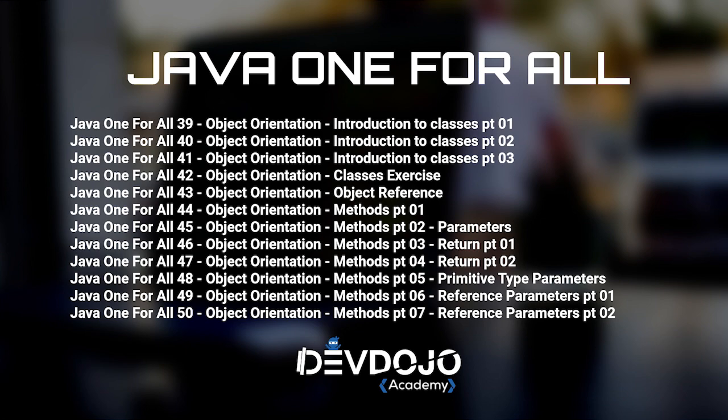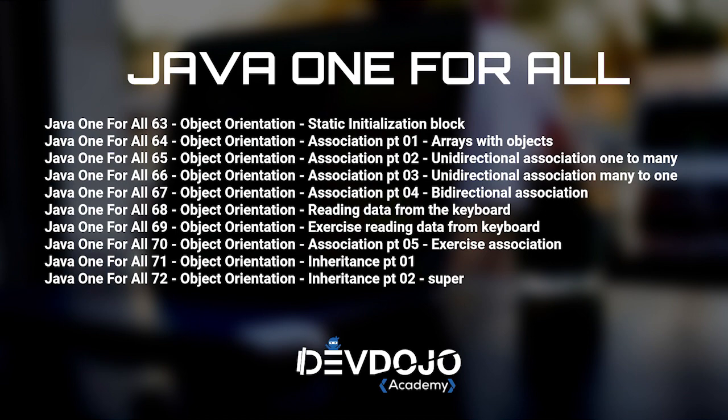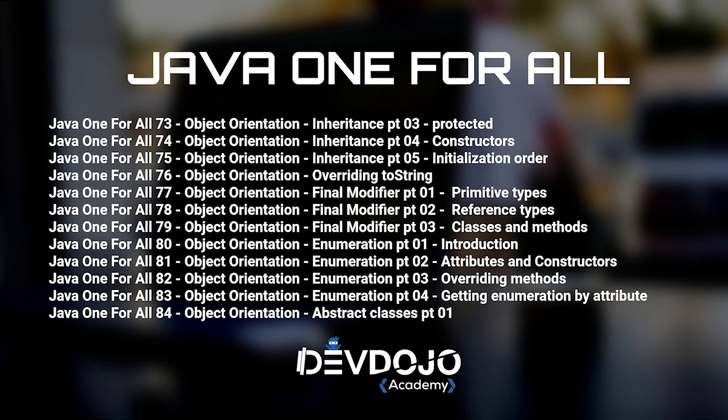Let's talk about object orientation. We are going to talk about classes, methods, access modifiers, how to overload methods, constructors, and the static modifier. We are going to talk about association. We are going to learn how to read data from the keyboard using the console. We are going to talk about inheritance.